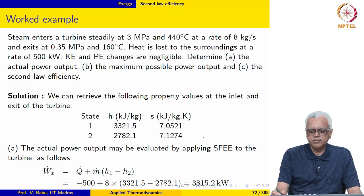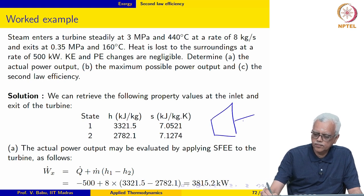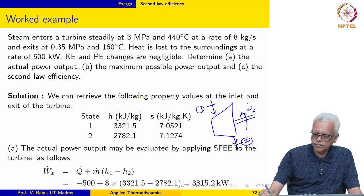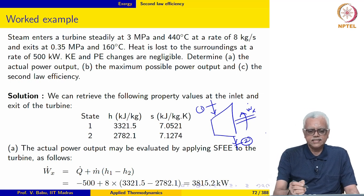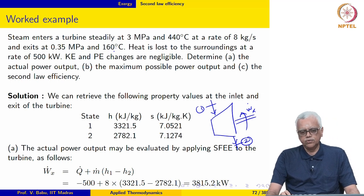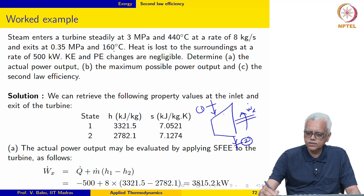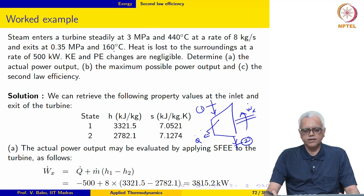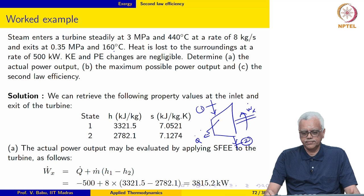The next example involves a steam turbine. Steam enters the turbine steadily at 3 MPa and 440 degrees Celsius — superheated — at a rate of 8 kg per second, and exits at 0.35 MPa and 160 degrees Celsius, which is also superheated. Heat is lost to the surroundings at a rate of 500 kilowatts. Kinetic and potential energy changes are negligible. Determine the actual power output, maximum possible power output, and the second law efficiency.